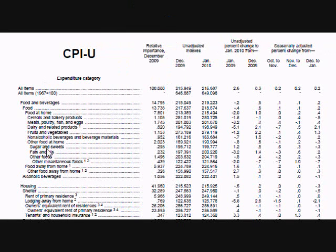For each category, an index number is provided that is an ongoing, continuous percent of change in prices from an original start date. For the main categories, this is 1982 to 1984. Every month they compare prices to what the average prices were in 1982 to 1984 and then add to, or subtract from, the total percentage of change since then.